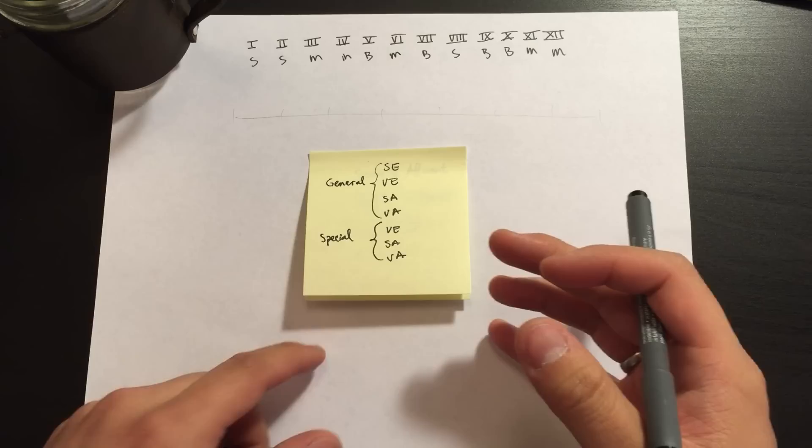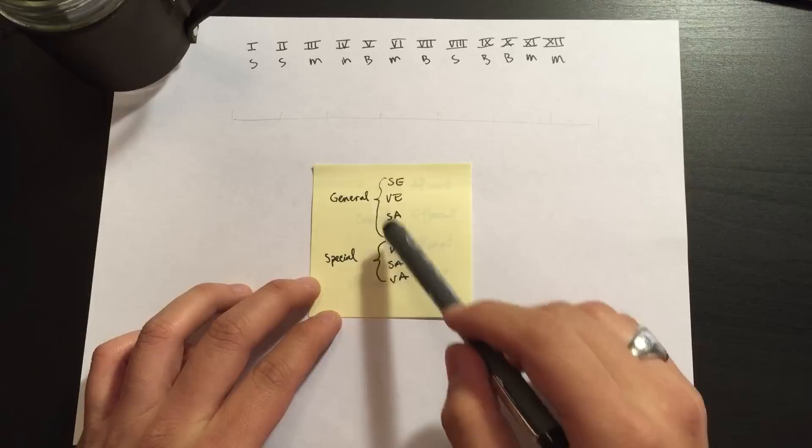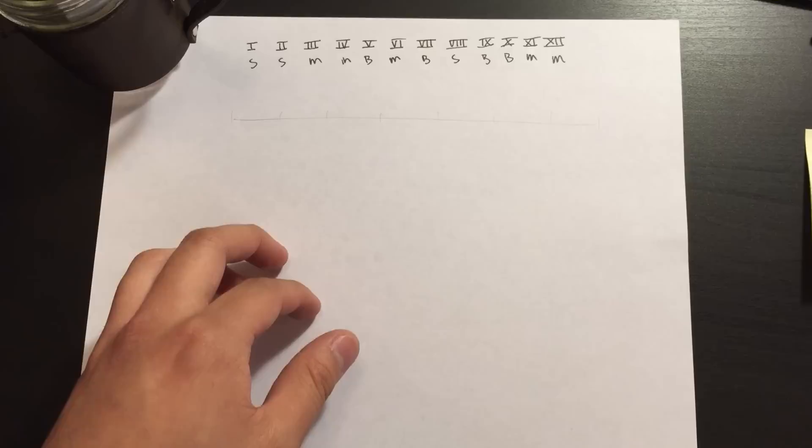So the way that this memory tool works is that we have these seven modalities and we'll be filling in beneath them the cranial nerves that belong under each category.